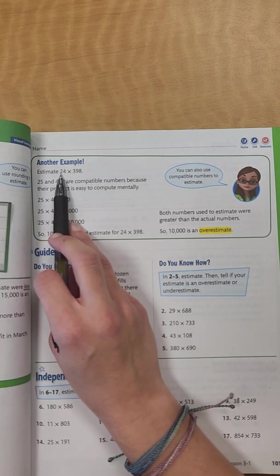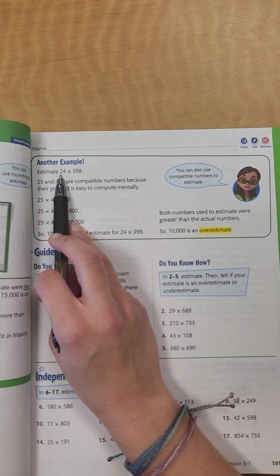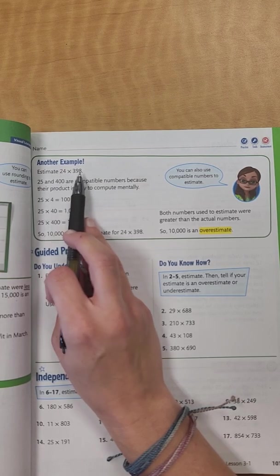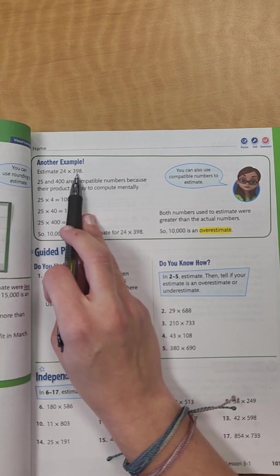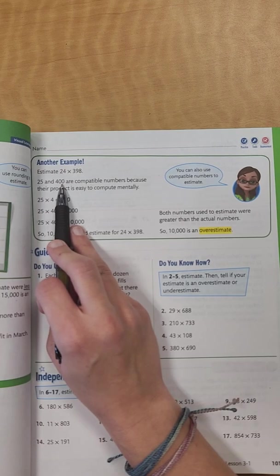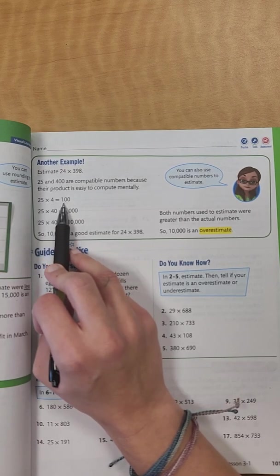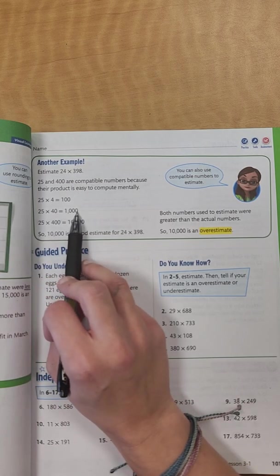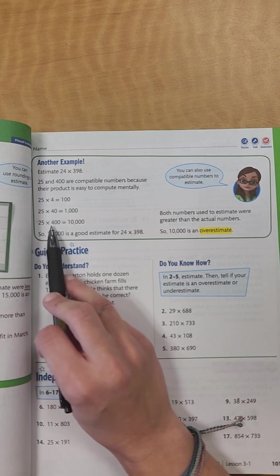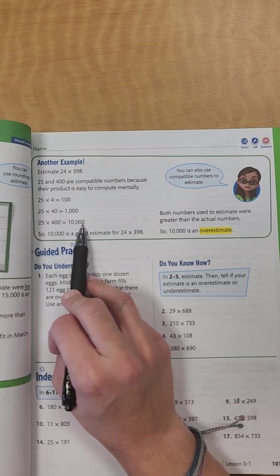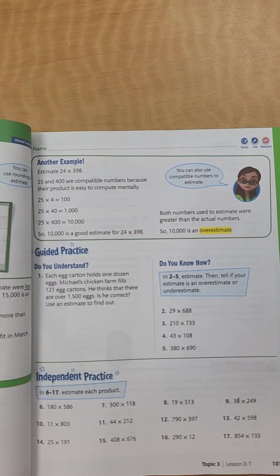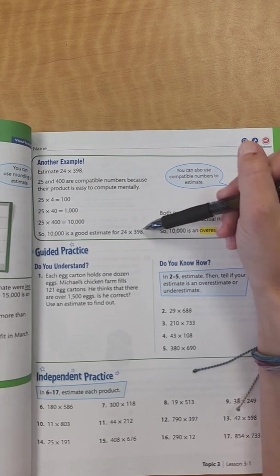Again, not rounding, but we know factors of 25 are a little bit easier than doing it by 30. So we have 25 times, and 4, instead of 398, we have 400. So we would multiply 25 times 4, which we know is 100. And then 25 times 40, we add an extra zero, so it's 1,000. 25 times 400, we would add two zeros, extra zeros, it would be 10,000. So $10,000 is a good estimate for 24 times 398.